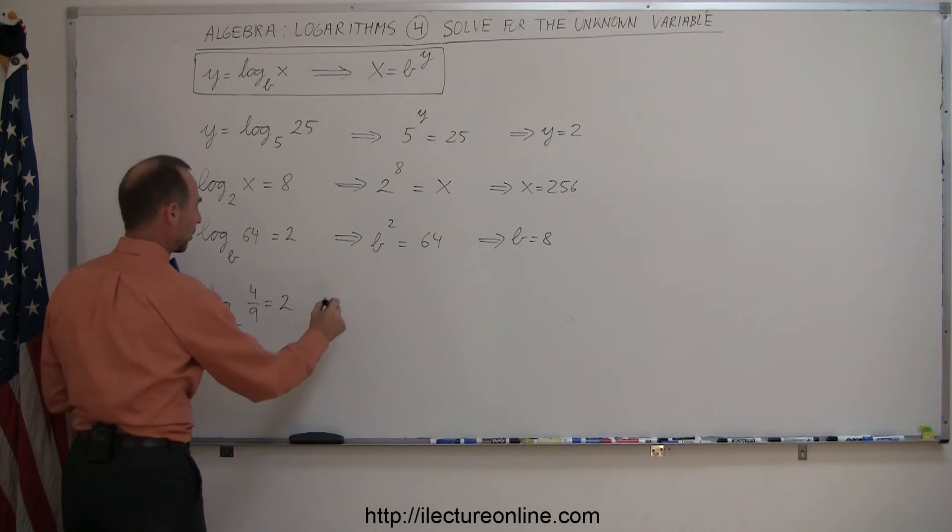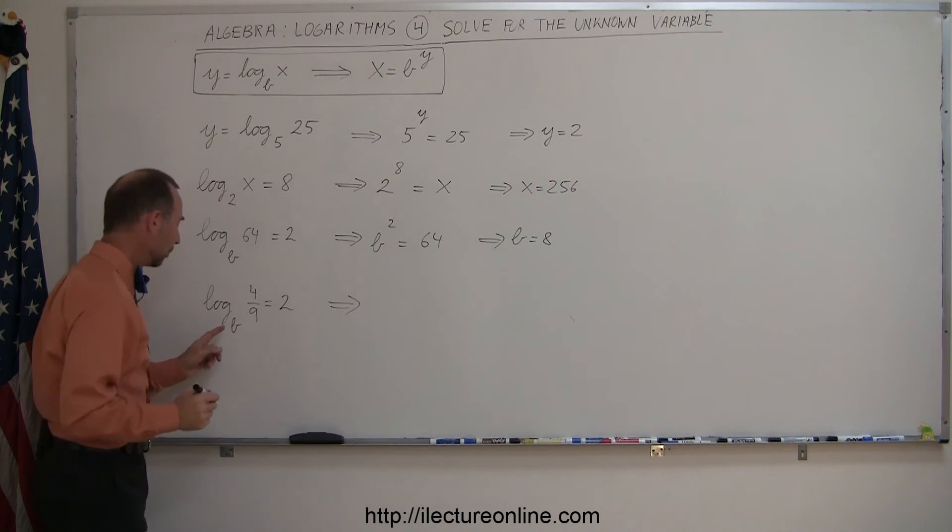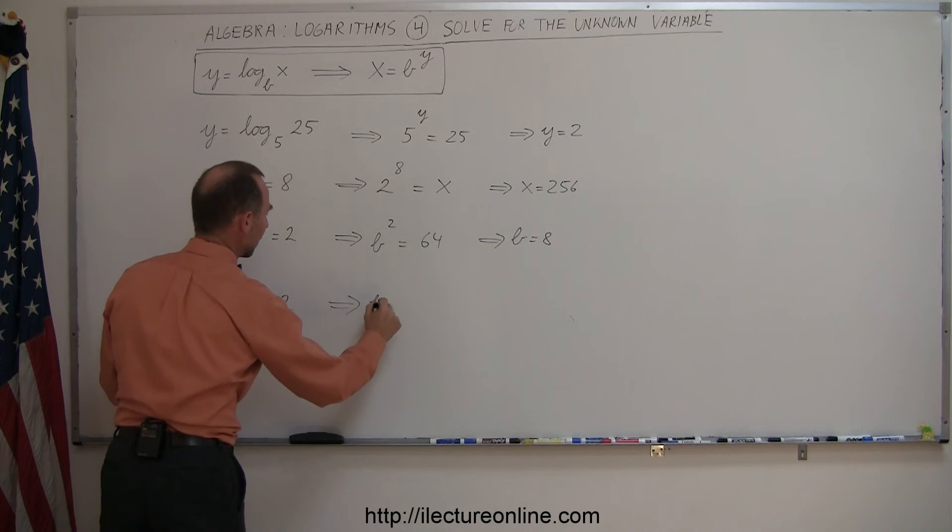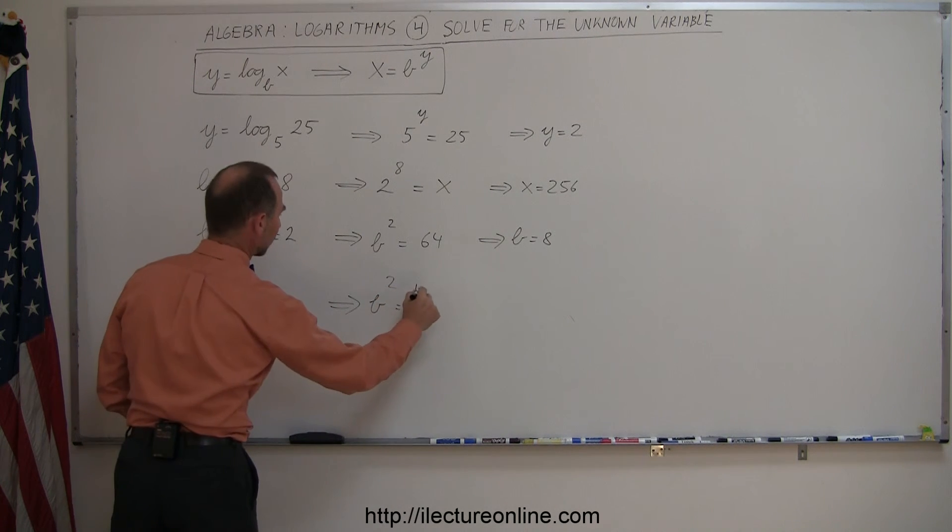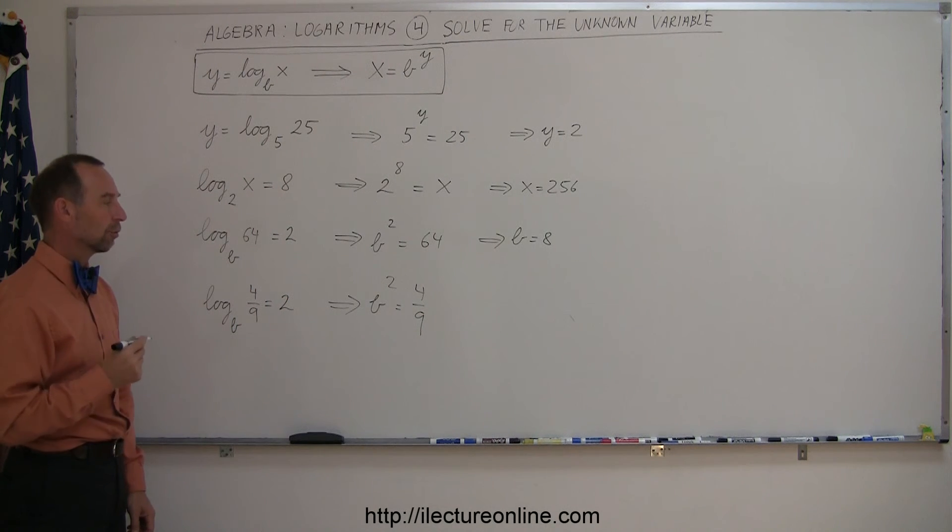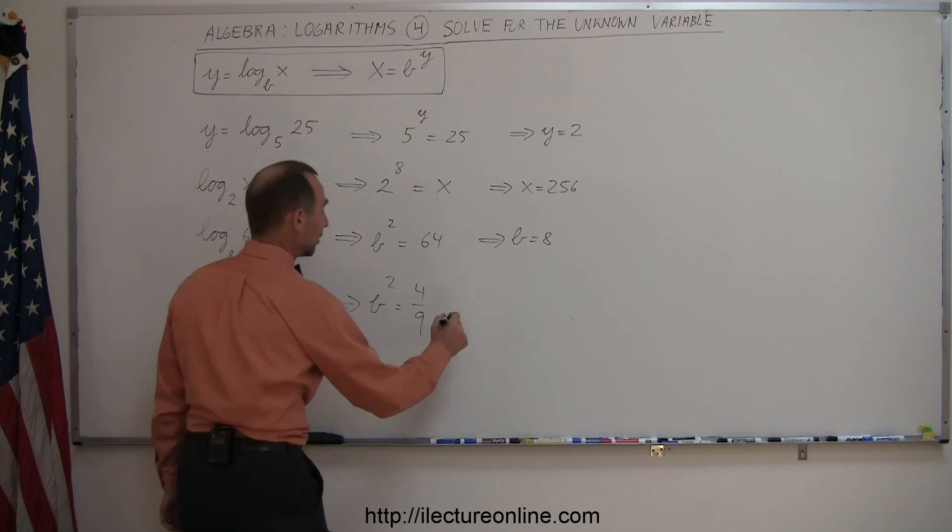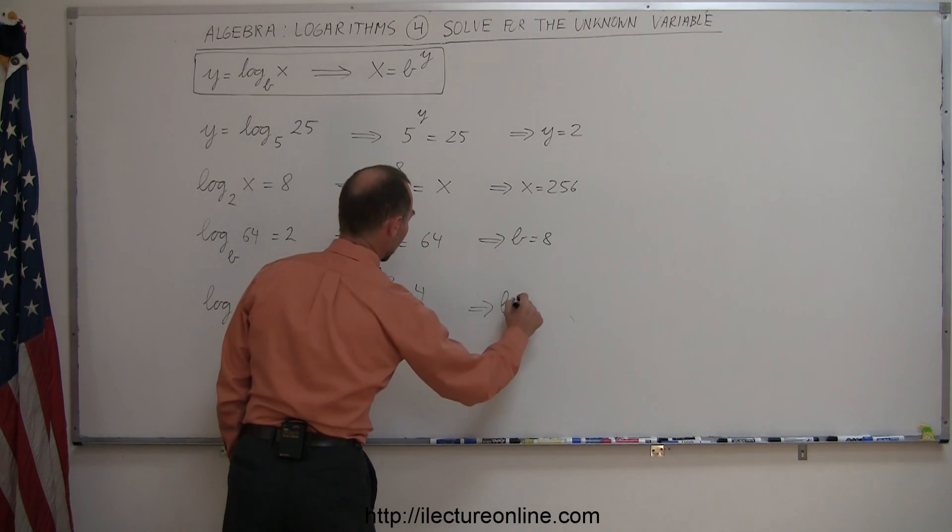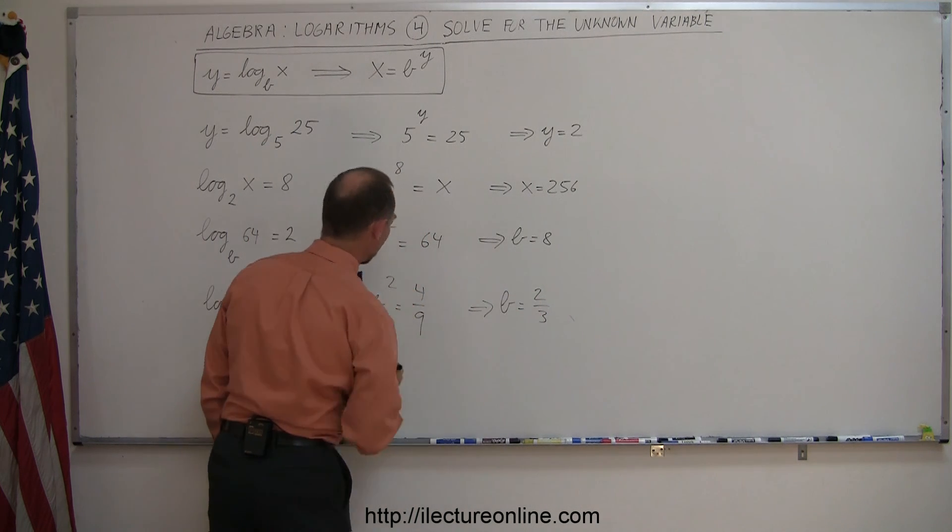And finally, we have this example right here. And we start with the base, b. We raise it to the second power, and now we get 4 over 9. So what number to the second power gives us 4 over 9? Well, 2 squared is 4, 3 squared is 9. That means the base should equal 2 over 3.